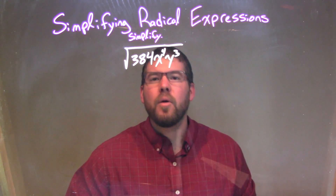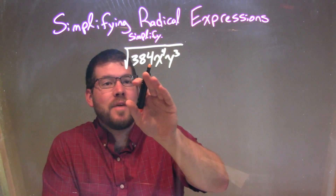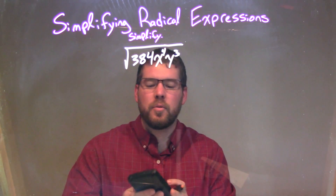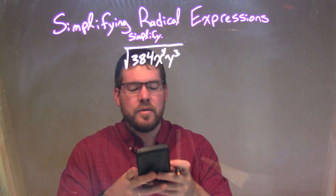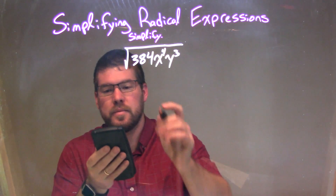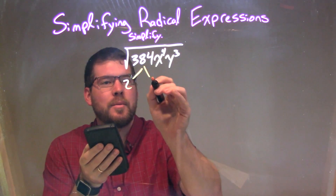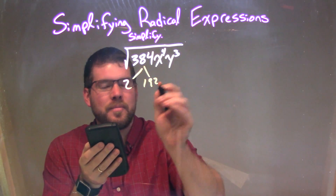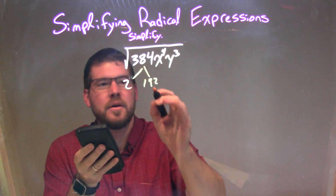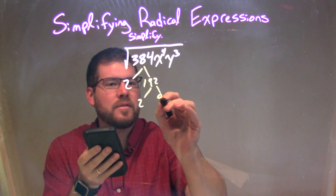What I want to do is perform prime factorization on 384. 384 is even, so 384 divided by 2 gives us 2 times 192. 192 divided by 2 is 96, so we have 2 and 96.